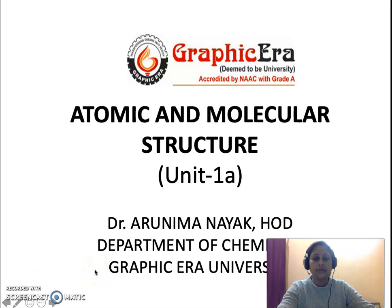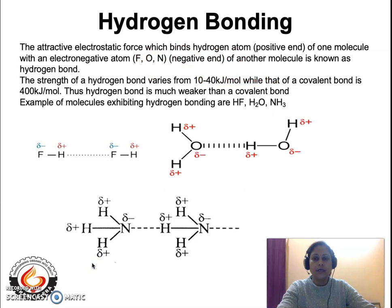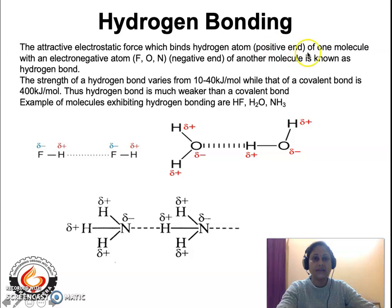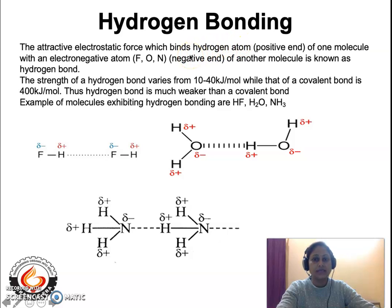Hello everybody, today we will be dealing with hydrogen bonding. You must have already learned about hydrogen bonding — it is something to do with hydrogen. How will you define hydrogen bonding? It is an attractive electrostatic force of attraction that binds the hydrogen atom at the positive end of one molecule with an electronegative atom at the negative end of another molecule. So there are two molecules involved: in one molecule hydrogen is involved and in another molecule an electronegative atom is involved. The bonding that exists between these two molecules is known as hydrogen bonding.